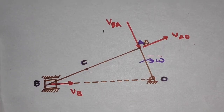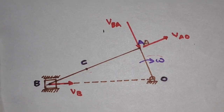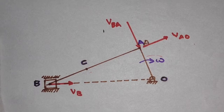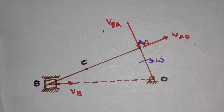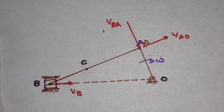In the previous lecture we have already seen how to determine the velocity of a four-bar mechanism using the graphical method. You can refer to the top right YouTube icon for the video lecture on determining the velocity of a four-bar mechanism using the graphical method.